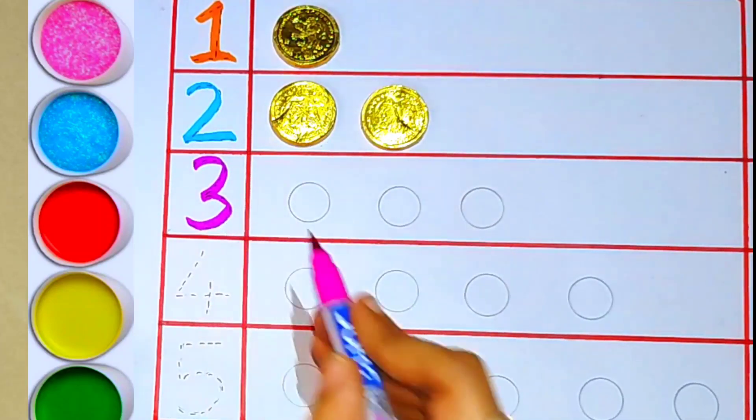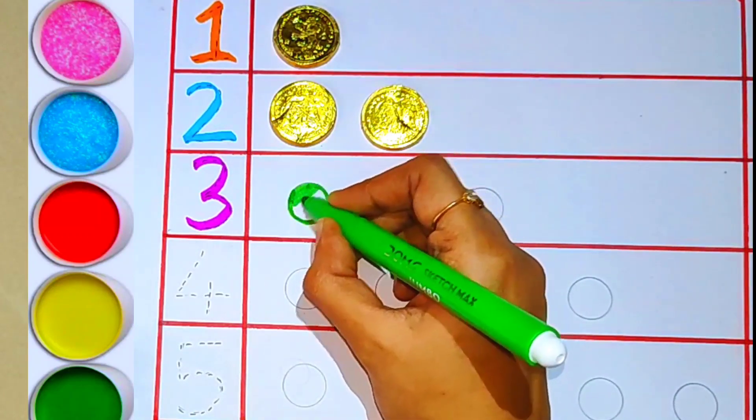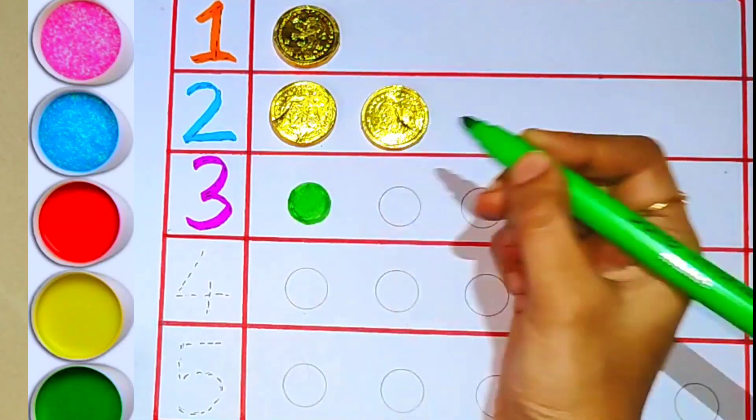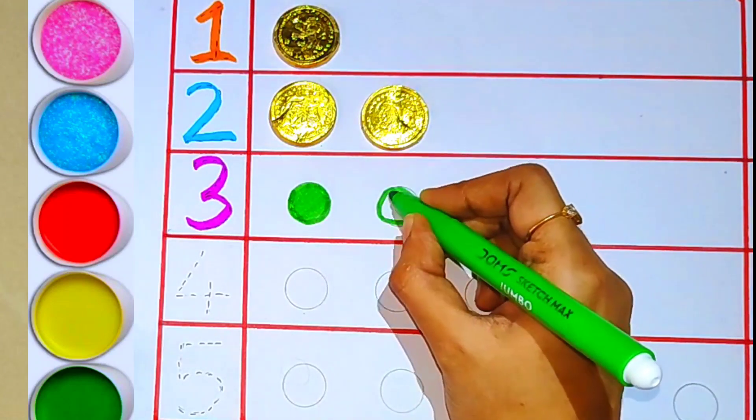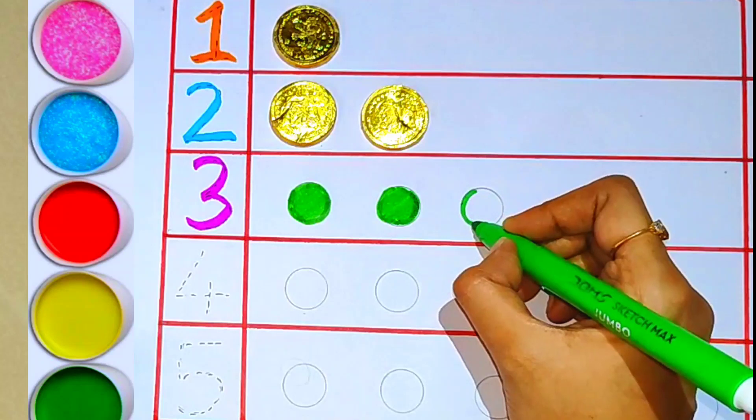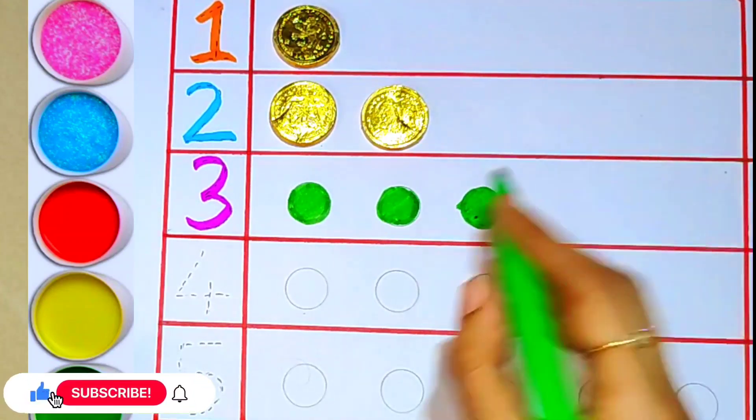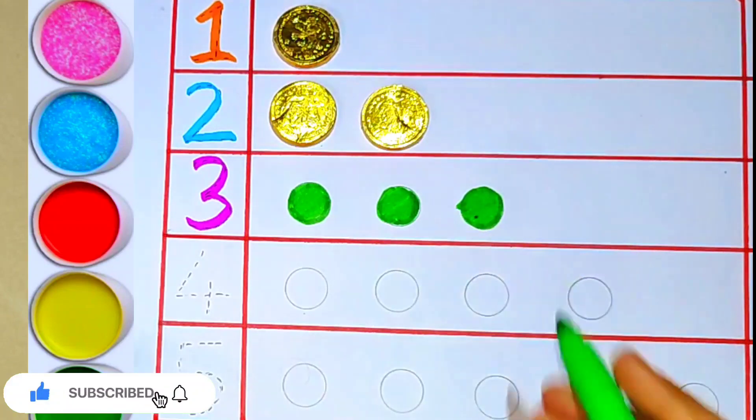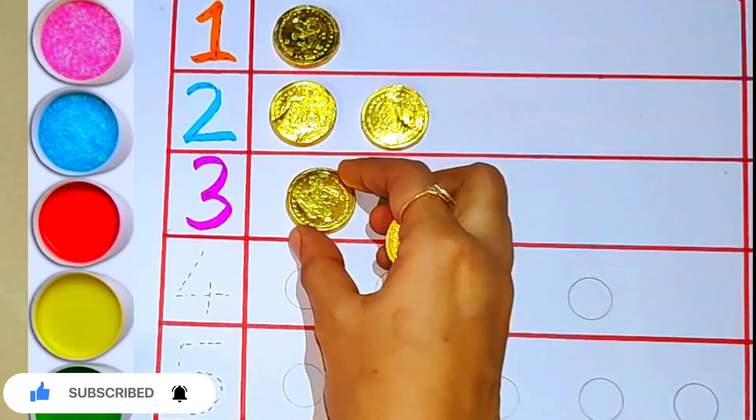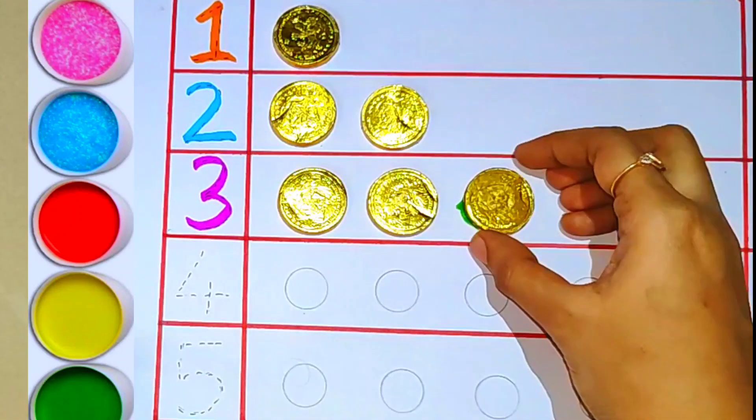Number three, bright green color. One, two, three - three balls. One, two, three - three coins.